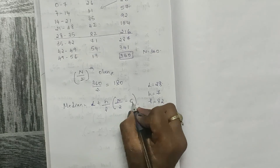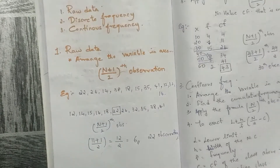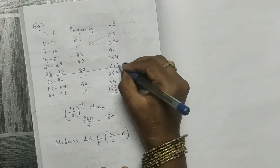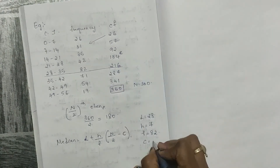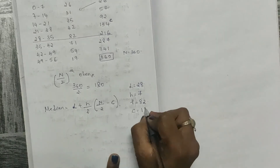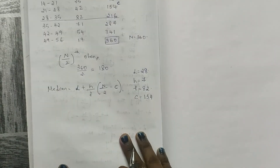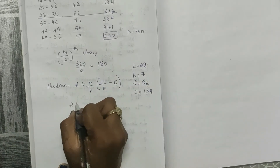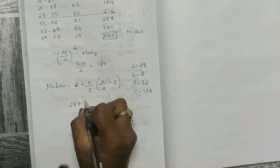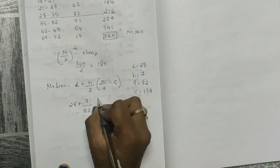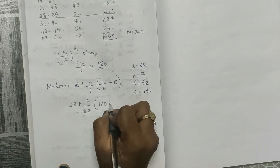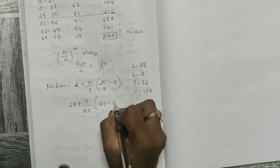Now find c, which is the CF of the class above the median class. That value is 134, so c equals 134. Now apply all values to the formula: 28 + (7/82) × (180 − 134).